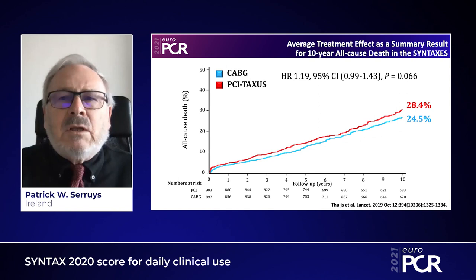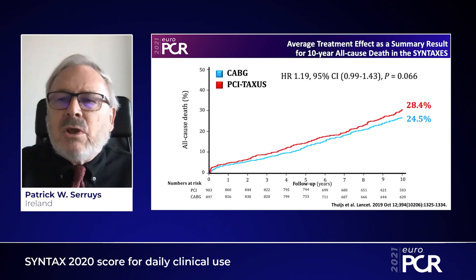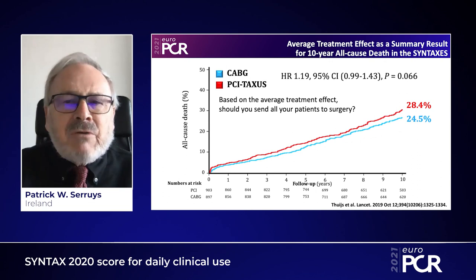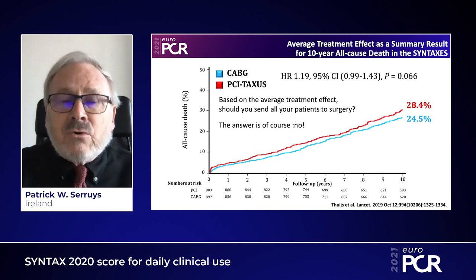The average treatment effect of the SYNTAX trial is shown here with 28.4% mortality for PCI and 24.5% mortality for CABG after 10 years. That's a hazard ratio of 1.19, a 19% increase in relative risk with a p-value which is borderline at 0.066. The question is: based on the average treatment effect, should you send all your patients to surgery? The answer is, of course, no.